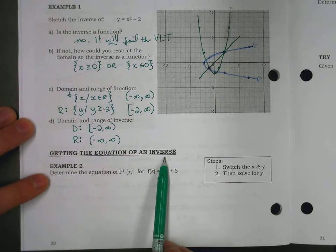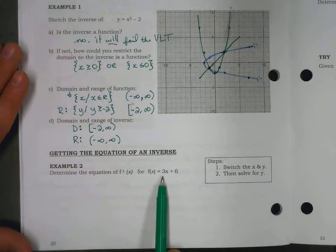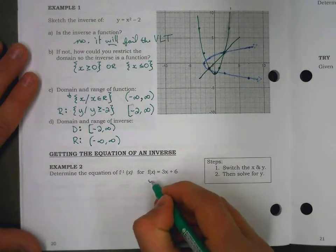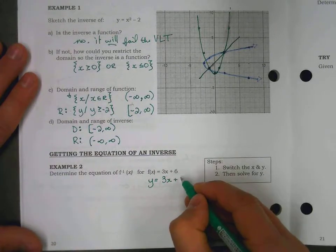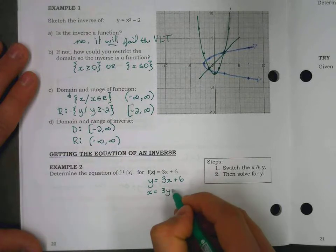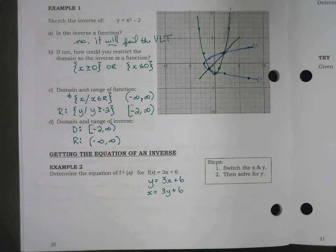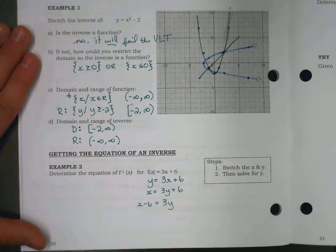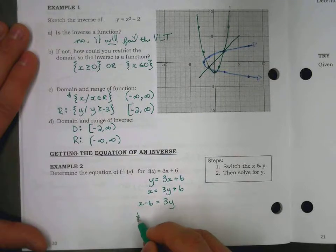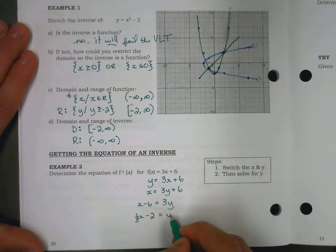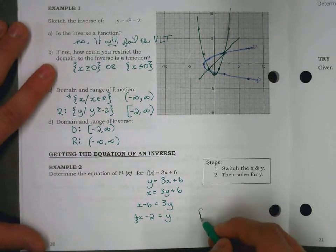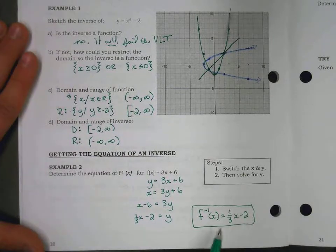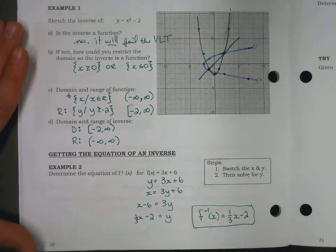With equations, we simply switch x and y. Given f(x) = 3x + 6, we write y = 3x + 6, then switch x and y: x = 3y + 6. To isolate y, subtract 6 from each side and divide both sides by 3, giving y = (1/3)x - 2. This is your inverse — a mirror image of the original.